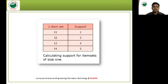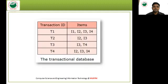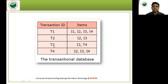In the first step we calculate the support of each item set. For item I1, we check transactions T1 through T4 and count the number of times I1 appears. In T1, I1 is present; in T2, T3, and T4 there is no I1. So the support count of I1 across the whole transactional database is only 1.